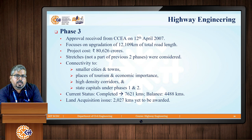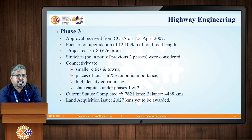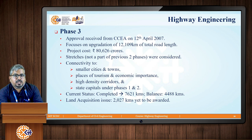Moving on to Phase 3, an approval was required, and for this purpose, the Cabinet Committee of Economic Affairs provided approval on 12th April 2007. The main aim was to upgrade a total road length of 12,109 kilometers, with an estimated project cost of rupees 80,626 crores. The stretches considered in this phase did not include any from the previous two phases. The main focus was on connectivity to smaller cities and towns, places of tourism and economic importance, high-density corridors, and state capitals that were part of Phase 1 and Phase 2.